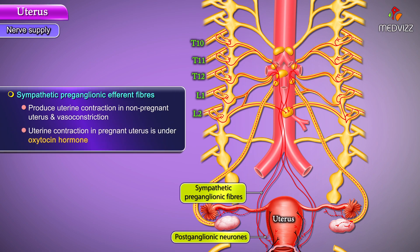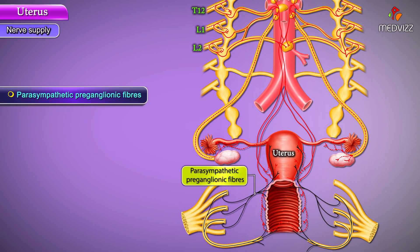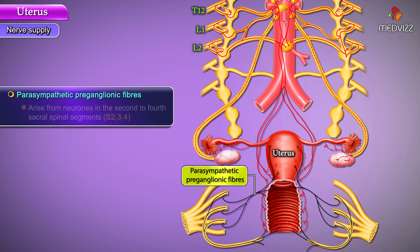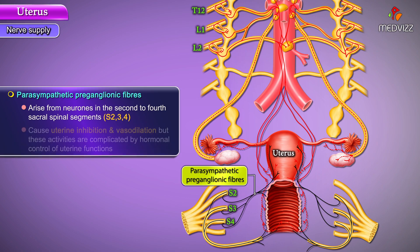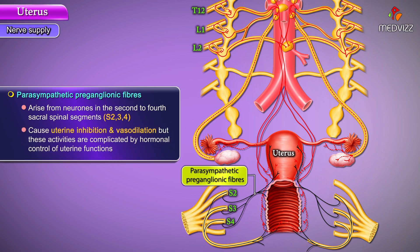Uterine contraction in the pregnant uterus is under oxytocin hormone. Parasympathetic preganglionic fibers arise from the neurons in the second to fourth sacral spinal segments S2, S3, S4, and cause uterine inhibition and vasodilation, but these activities are complicated by hormonal control of uterine functions.